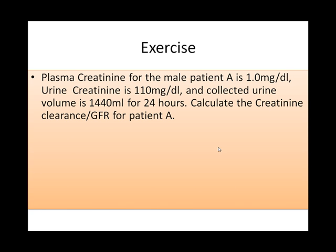The plasma creatinine for male patient A is 1 mg per deciliter. Urine creatinine is 110 mg per deciliter, and the collected urine volume is 1440 ml for 24 hours. Calculate the creatinine clearance or glomerular filtration rate for patient A.